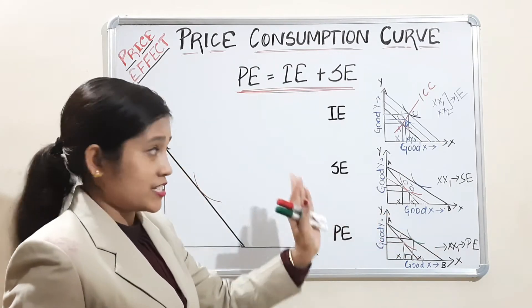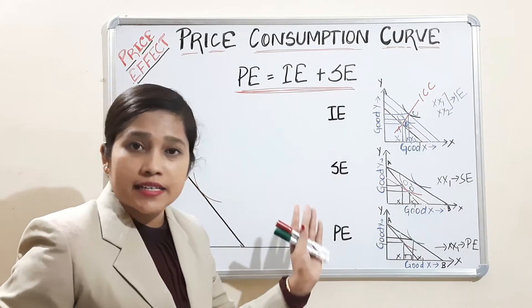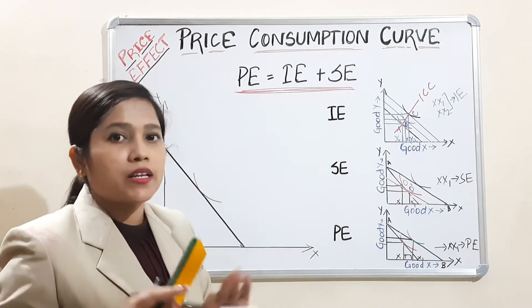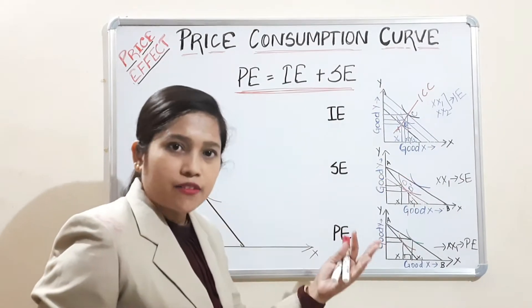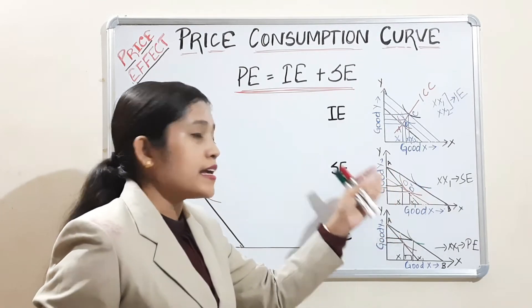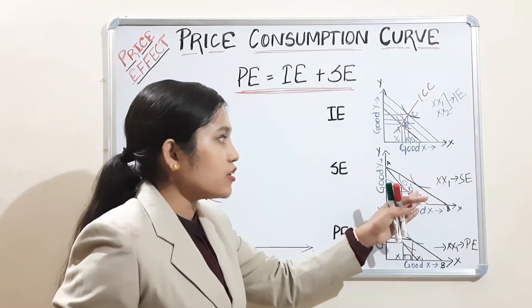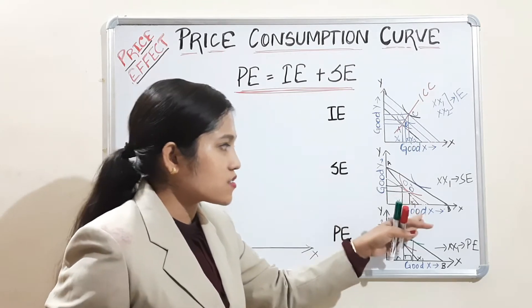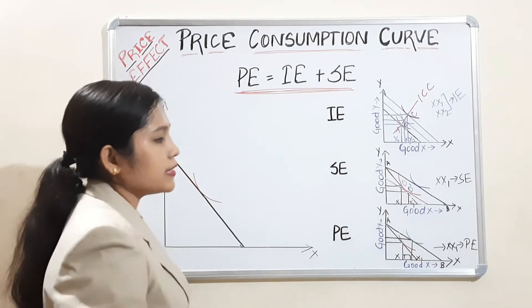Similarly, when the price of one commodity changes, the budget line rotates outward. We need to use the compensating variation — a decrease in money income — so that our purchasing power remains constant as before. For that, we shift this new budget line downward in such a way that it is tangent to the initial indifference curve. The resulting change in consumption, XX1, is called the substitution effect.